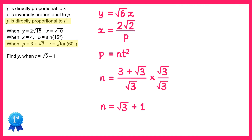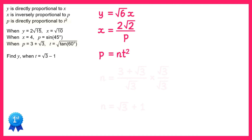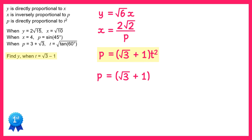We can now replace n in the formula with square root 3 plus 1, like this. Next we're told to find y when t equals the square root of 3 minus 1. We'll substitute the t value into this formula: p equals (root 3 plus 1) times t squared, where t is root 3 minus 1, so we write that in a bracket squared. Squaring a bracket means multiplying it by itself, so we have this bracket twice.